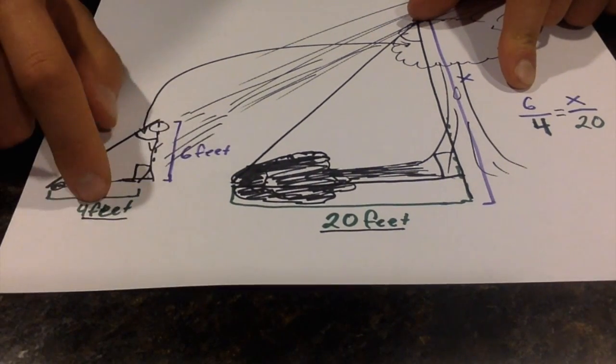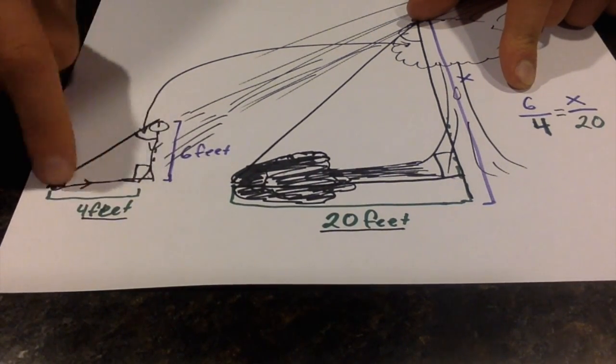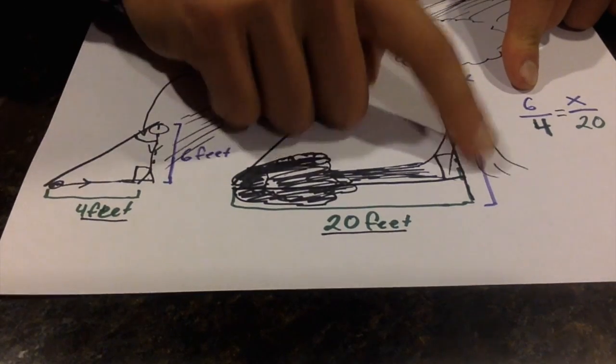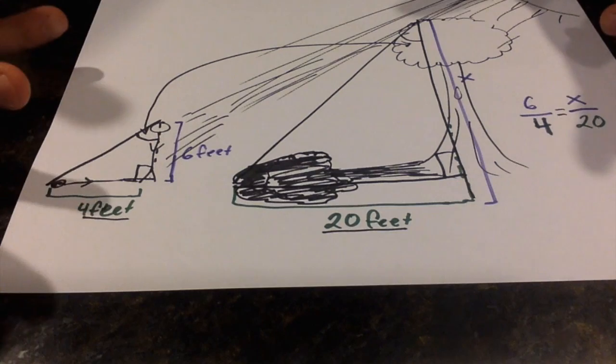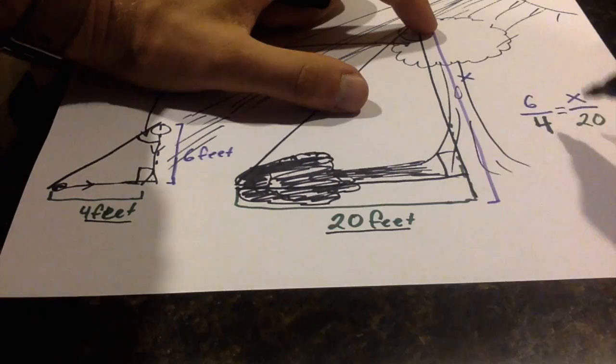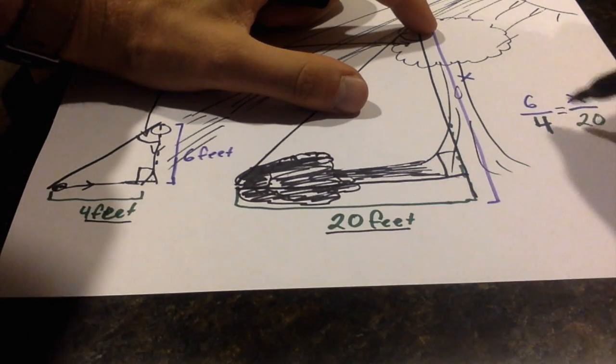I'm also going to say that six is to four, the horizontal shadow length, as x is to 20. Now that we have a proportion, we have three terms, we can solve for the fourth.